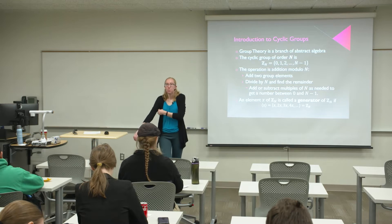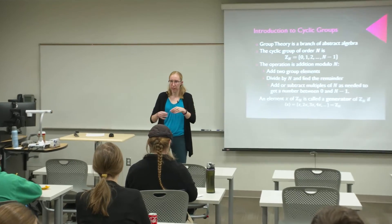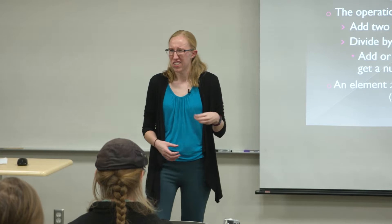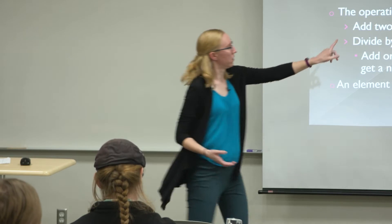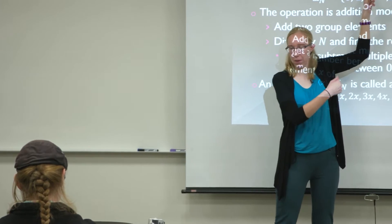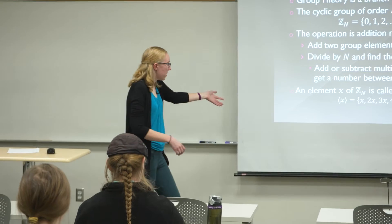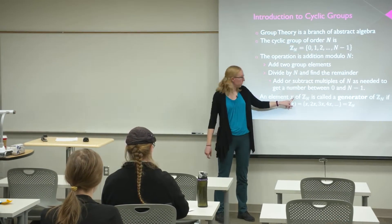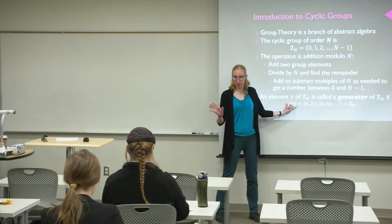The official definition of adding mod n: you add the elements like you normally would, divide by n and find the remainder. But it's easier to think: if I add two numbers and get something too big — something not in the range — I just subtract n to get back to the range. An element is called a generator if the cyclic group generated by that element equals the whole group.